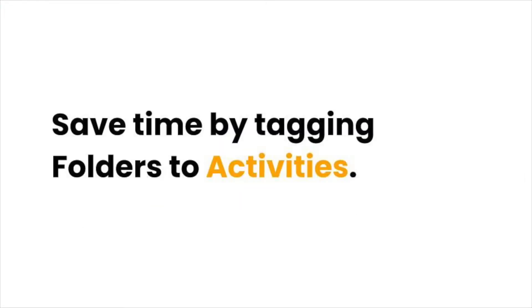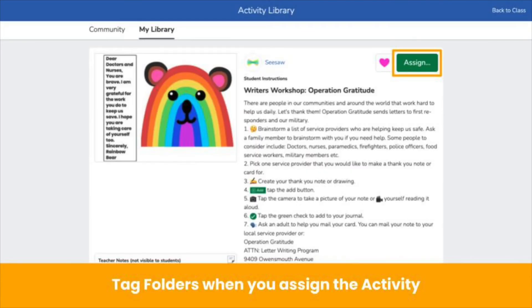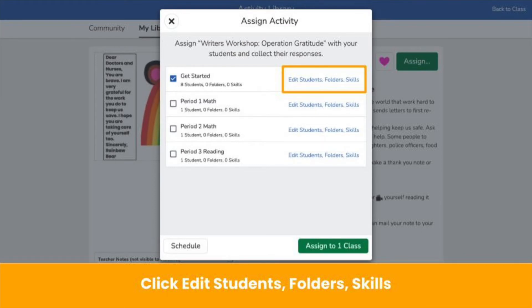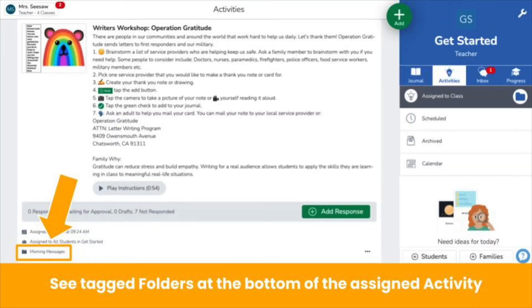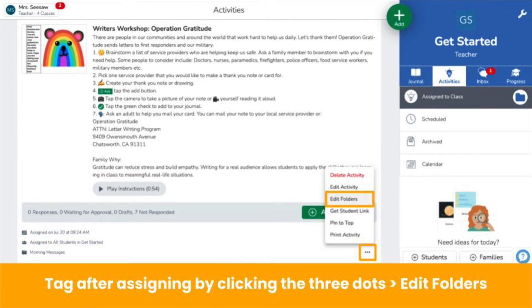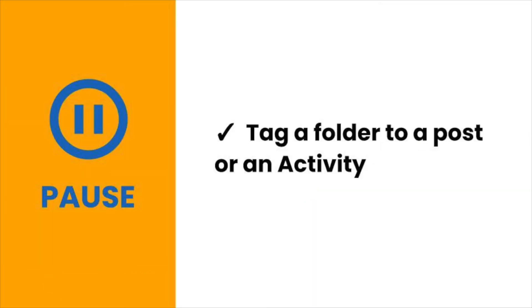Tagging posts one by one is time consuming. Save time by tagging folders to activities. When students respond to the activity, all responses will be tagged to that folder automatically. Click assign, then click edit students folder skills. In the folders tab, select a folder. When you assign the activity, you see tagged folders on the bottom of the activity. If you forgot to tag a folder before you assigned, that's okay — just click the three dots on the assigned activity, then edit folders. Pause the video now and tag a folder to a post or an activity.